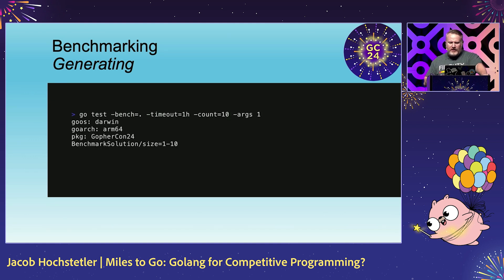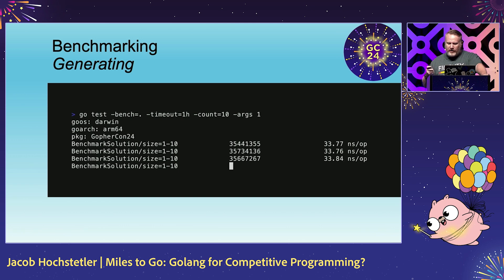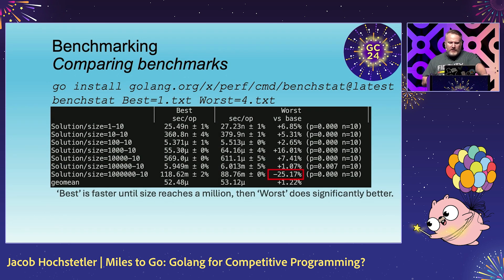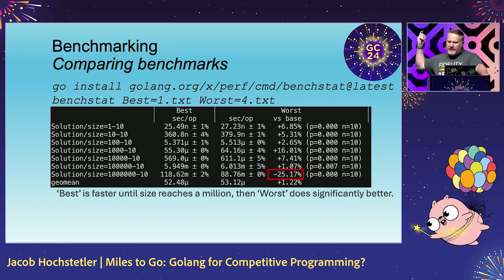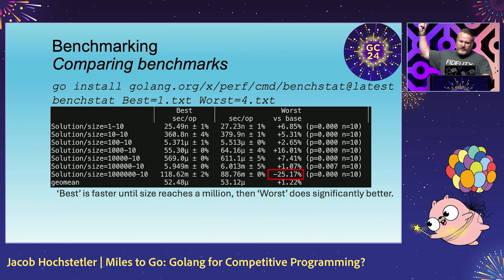Here's us running it — `go test` with a timeout, just a few seconds to show the benchmark running. Then we can do a comparison. As we see here, our best solution — when we got to a million elements — actually did the worst; it was 25% worse. We're using the benchstat comparison here.